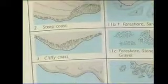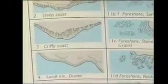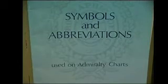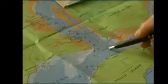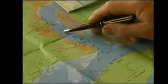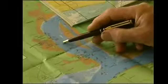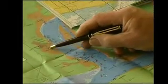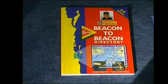These charts use standard symbols which are contained in the book 'Symbols and Abbreviations Used on Admiralty Charts.' There are many local charts available in Australia for small craft operators, such as the Parks Victoria Guide to Recreational Boating on Western Port, produced by the State Government Authority. Other guides are produced by commercial interests, such as the Beacon to Beacon directory, which has become a boating bible in Queensland.